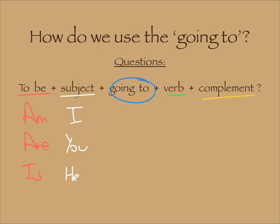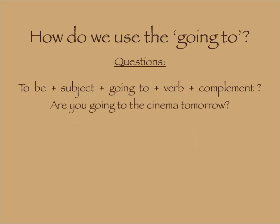Then we complete the sentence. For example: 'Are you going to visit the school?' or 'Are you going to the cinema tomorrow?' Remember that the complement could be anything — a place, a time, a person.